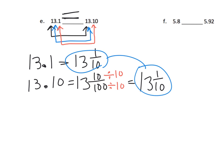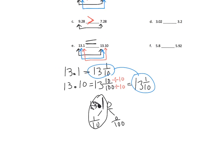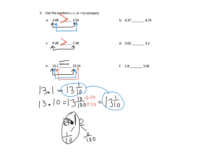That tells us they're equal. Another way to think about it: 13.10 — let's just look at the decimal. That decimal says you have one tenth and zero hundredths, so one tenth. That's another way to show it's equal to 13.1. We have a lot of ways for students to think about this, not to mention they could use the area model or the number line.